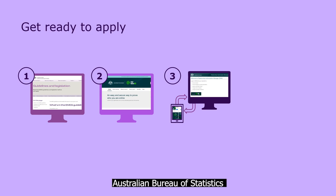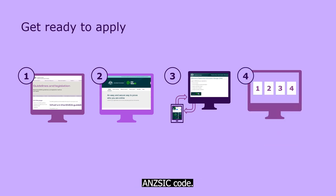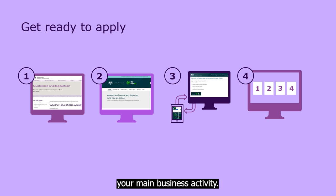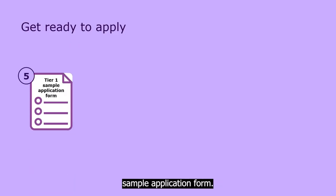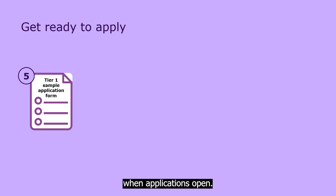Get your Australian Bureau of Statistics ANZIC code. It's the four digit industry class that best describes your main business activity. For step five, from the Austrade website, download the Tier 1 sample application form. Familiarise yourself with it so you can fill it out quickly and easily online when applications open.